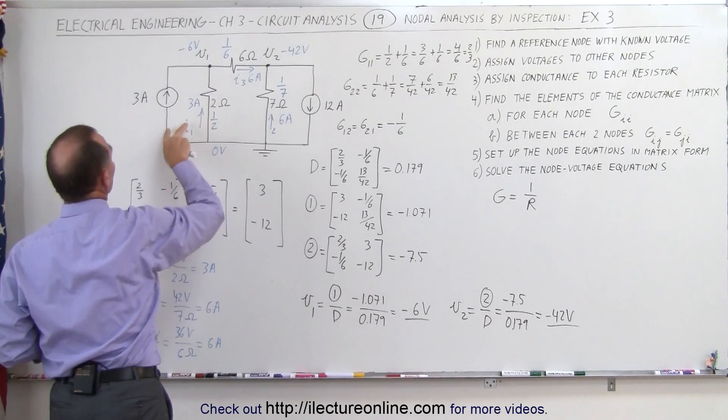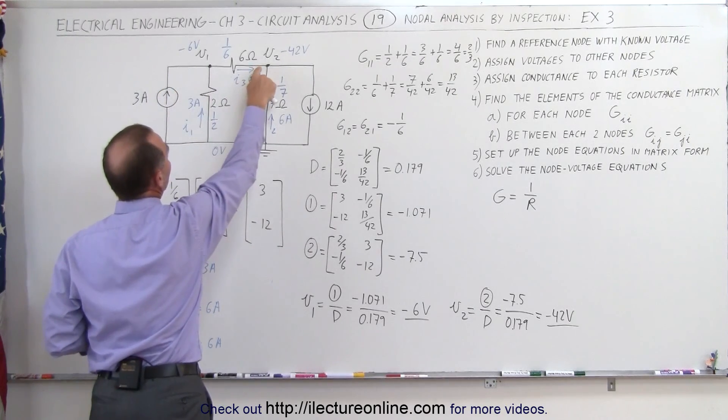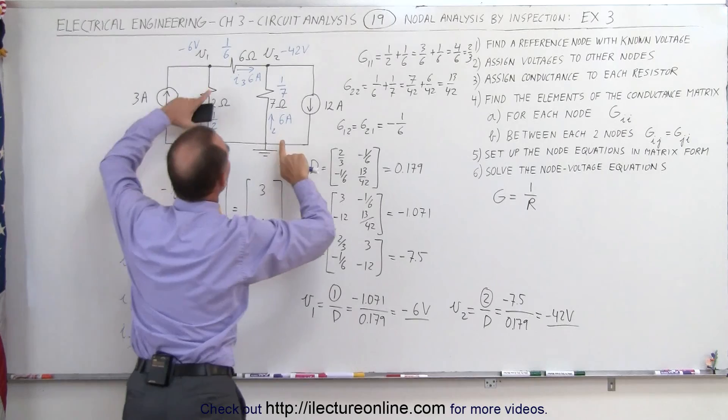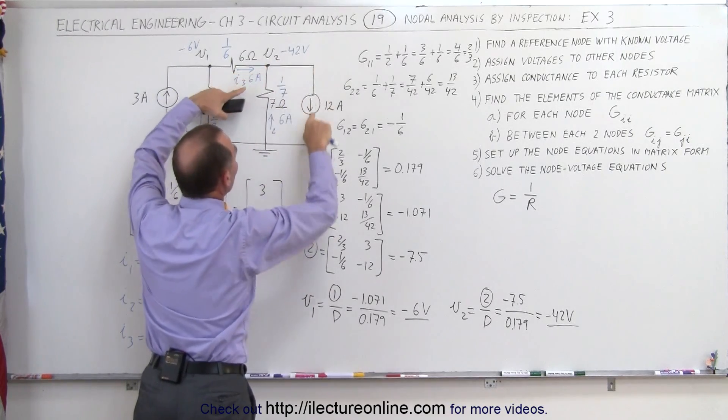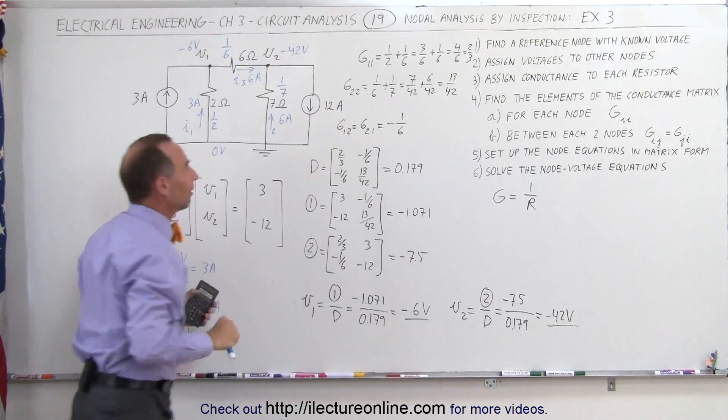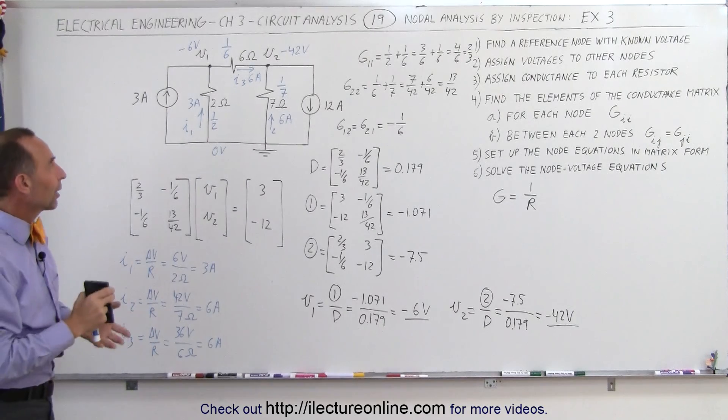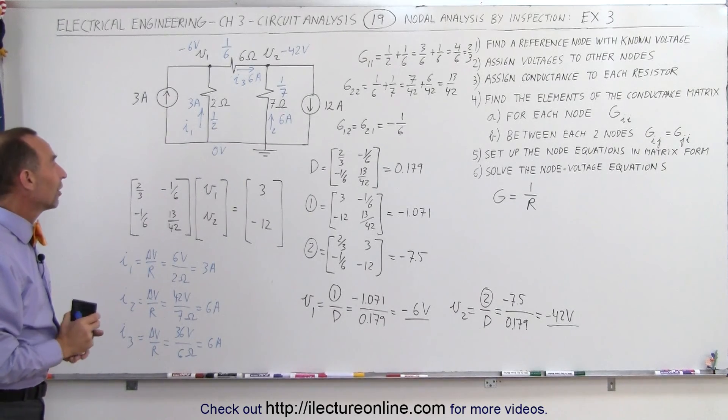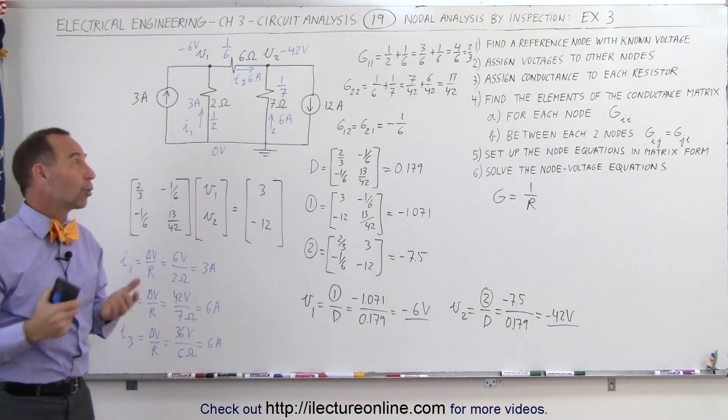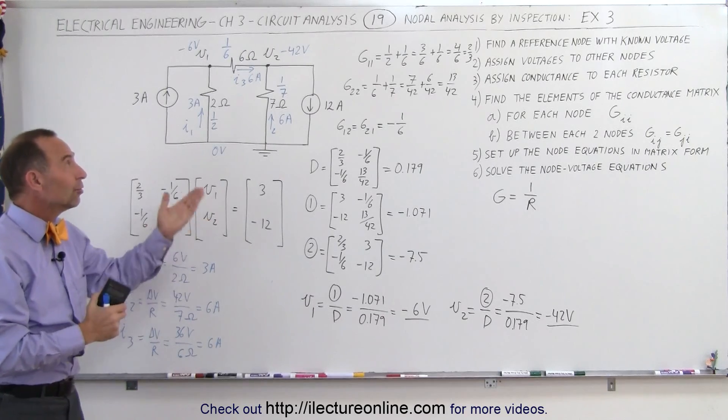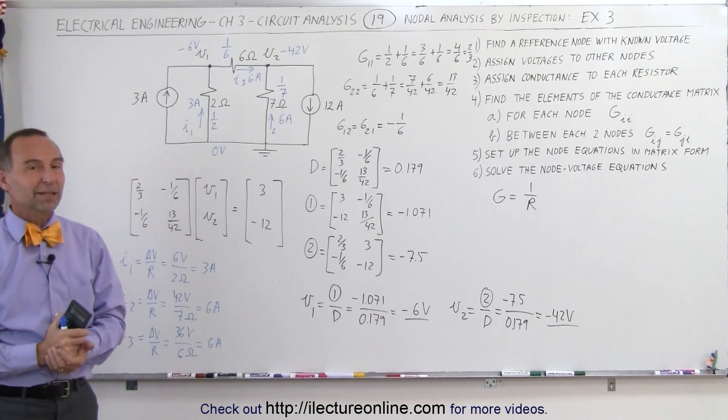3 amps plus 3 amps is 6 amps, that equals the 6 amps in here. We have 6 amps coming up here, the two 6 amps together form 12 amps, and it looks like everything works out just fine. We have the correct currents and the correct voltages at the nodes, and notice how quickly you can come up with those numbers by using the node analysis by inspection. It's a really good method.